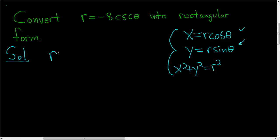So a good first step is maybe to write this as negative 8 times 1 over sine theta. And we're still not where we want to be because we don't have an r here. So one idea is to multiply both sides by sine theta.